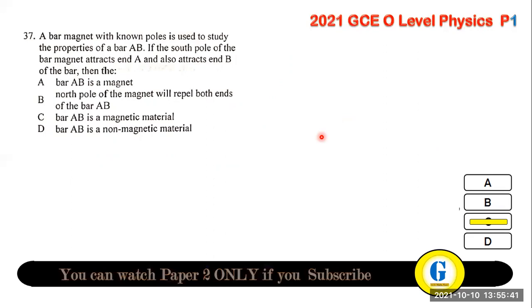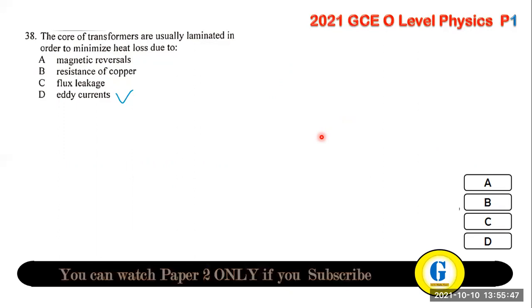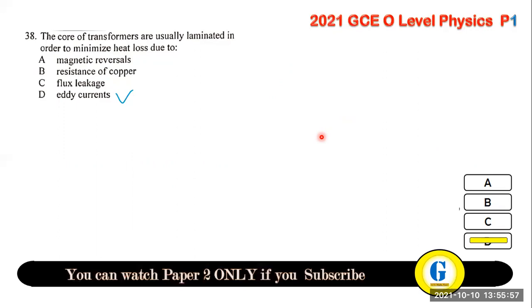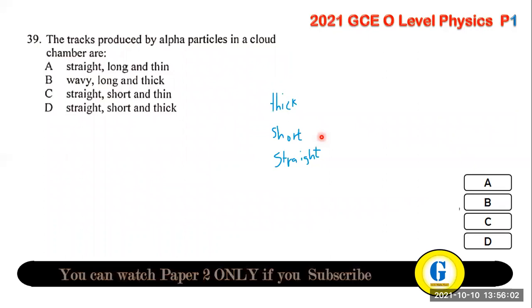Question 38: the cores of transformers are usually laminated in order to minimize heat losses due to eddy currents.